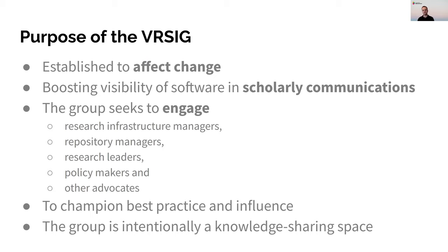The Visible Research Software Interest Group has been established to affect change. In short, this is about boosting the visibility of research software in scholarly communications. To do this, we seek to engage with research infrastructure managers, repository managers, research leaders, policymakers and other advocates — those who have the capacity to champion best practice and influence the adoption of policies, services and technologies. The group is also intentionally a knowledge sharing space to disseminate resources and strategies to support increased visibility and recognition of research software.